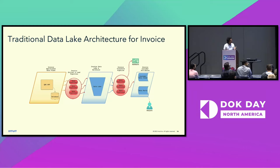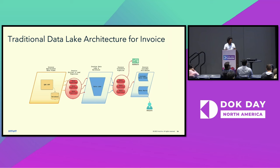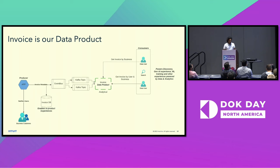For the invoice use case at Intuit, data follows a similar pattern. There's a QBO application with its own relational database. The QBO application produces invoice data that is written to the data lake via data pipelines. From those pipelines, further transformation happens for enabling invoice-related dashboards, providing customer-related attributes, and more data analytical experiences. One of the core aspects is taking this invoice as our data product, treating it as such to improve the usability and discoverability of invoice data.